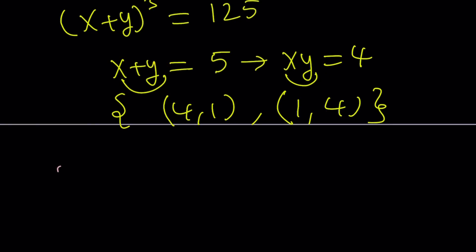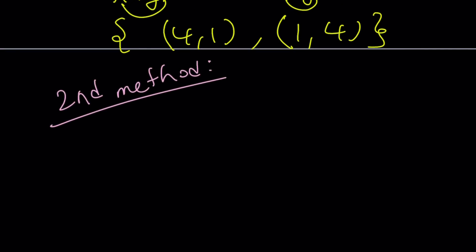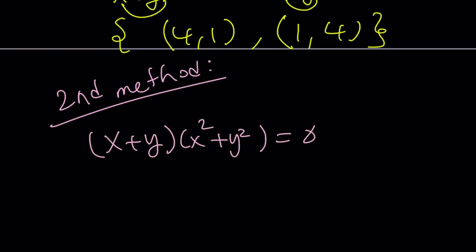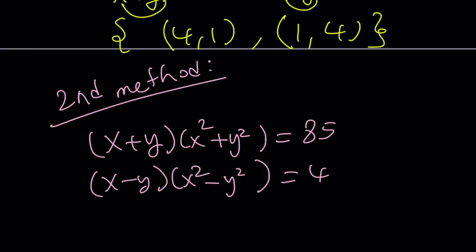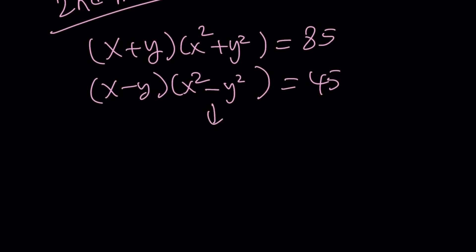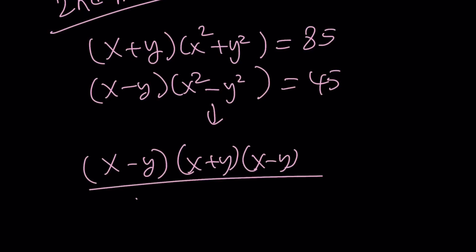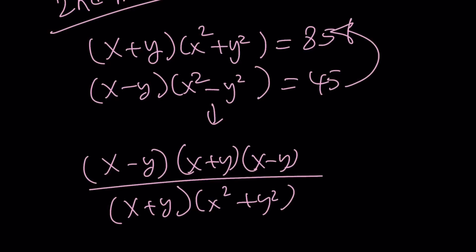Let's look at the second method. Division makes sense here because the second expression can be factored: x squared minus y squared is a difference of two squares, so it becomes x plus y times x minus y. Dividing the second equation by the first gives x minus y squared over x squared plus y squared equals 45 over 85, which simplifies to 9 over 17.